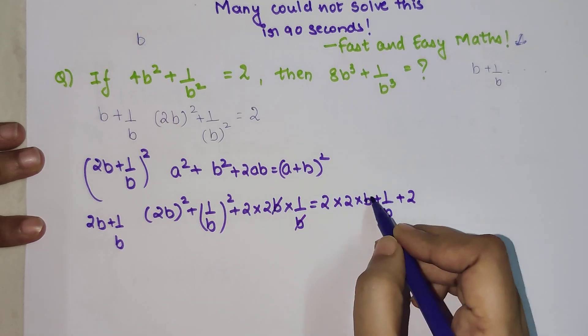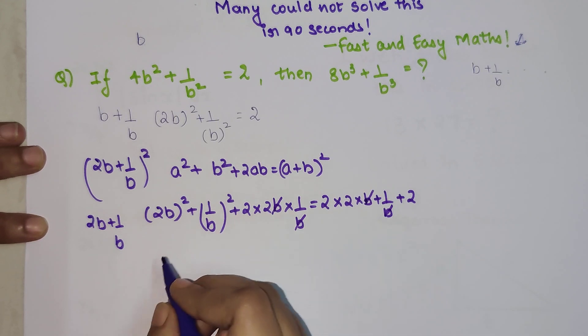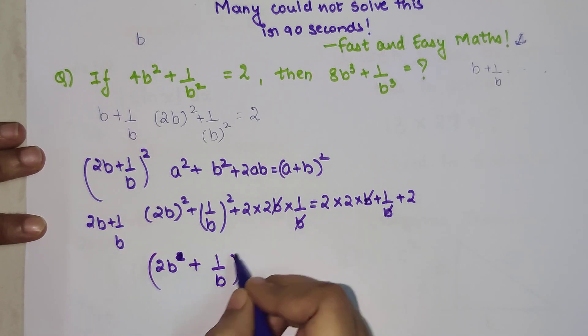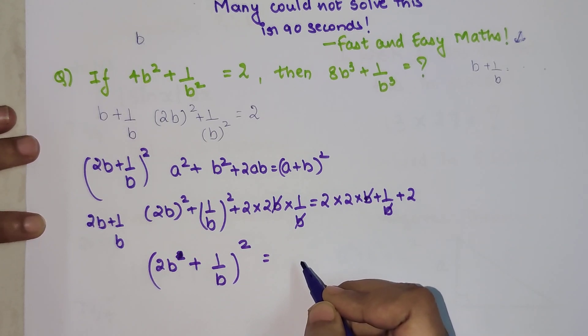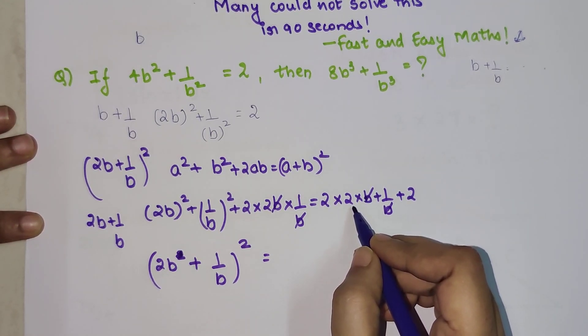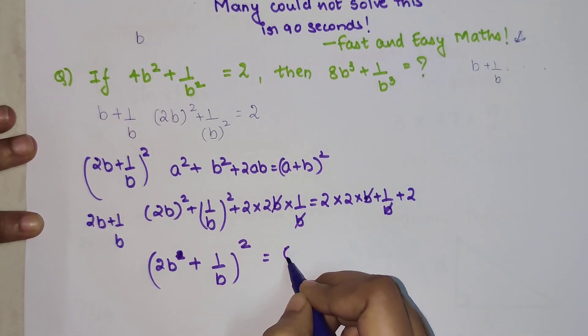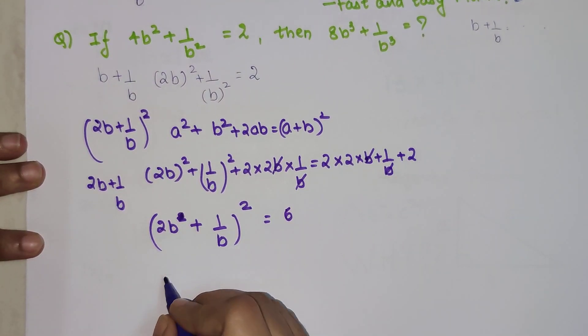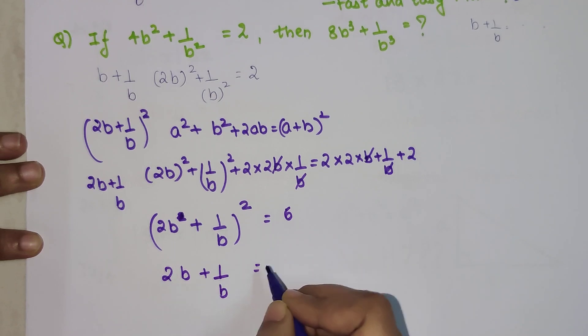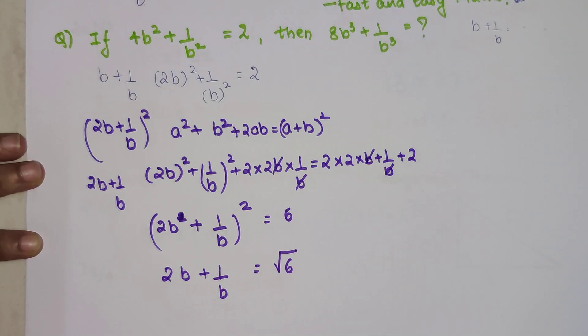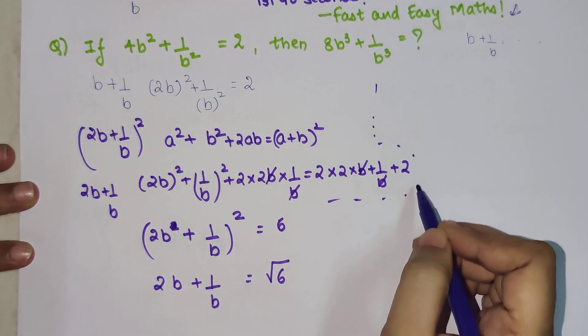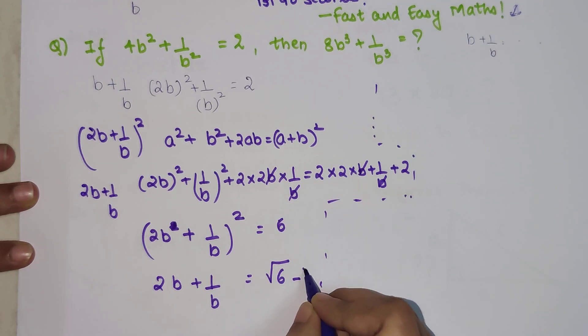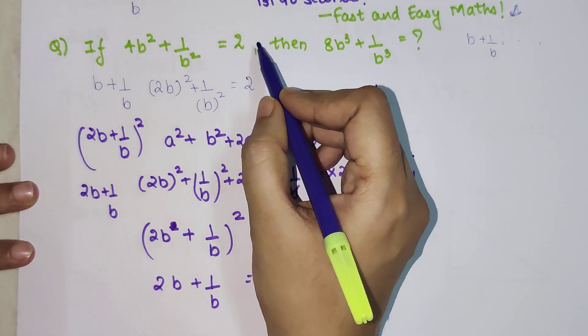Now the b's are getting cancelled. So now what do I get over here is (2b + 1/b)² because everything is in terms of expansion of (a + b)². Now what do I get over here is 2 × 2 which is 4 which is getting added to 2, so we will get around a 6 over here. So can I say that 2b + 1/b is equal to √6, taking square roots on both sides.